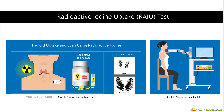Another important modality in the workup of thyroid nodules is the radioactive iodine uptake test. In this uptake test, the patient is given radioactive iodine with the I-131 isotope. We are then able to scan the thyroid in order to look for uptake of this isotope, producing a result that shows normal uptake versus hyper-functioning areas consistent with Graves' disease. Using this uptake test, we can determine whether the patient has a hot nodule or a cold nodule based on whether there is high or low uptake.